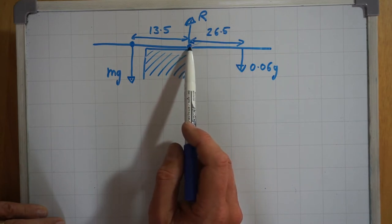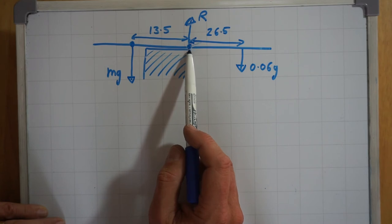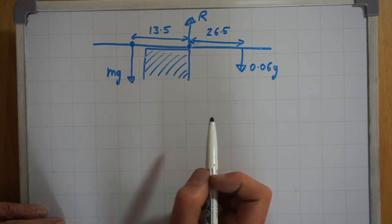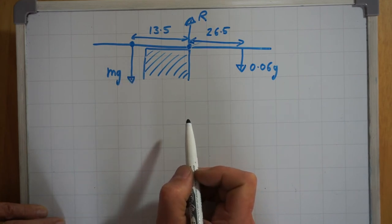There will be a normal reaction which because the meter rule is on the point of tipping will be acting right at the edge of the box, and there is the weight of the meter rule which we would assume acts at its center at the 50 centimeter mark.